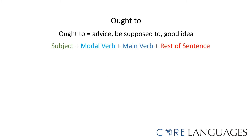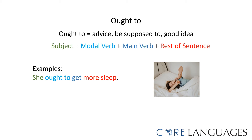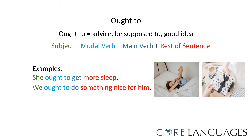The semi-modal verb 'ought to' is used to express advice, or that someone is supposed to do something, or to say that something is a good idea. The word order is the same: subject, modal verb, main verb in its base form, and the rest of the sentence. For example, she ought to get more sleep. Or, we ought to do something nice for him. To negate 'ought to', we simply say 'ought not to'.